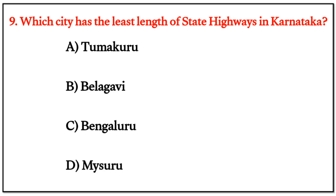MCQ Question 9: Which city has the least length of state highways in Karnataka? The correct answer is option C — Bengaluru.